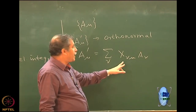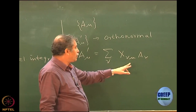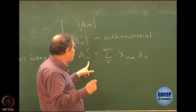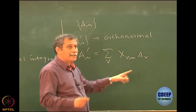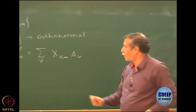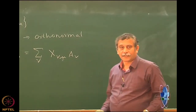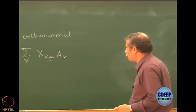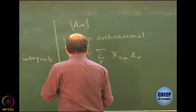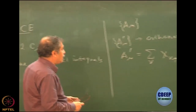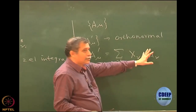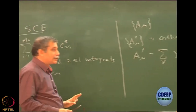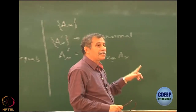We construct A_μ prime by a transformation, using a transformation matrix X. We write it as A_μ prime equals sum over ν of X_νμ A_ν. Note the way the indices have been used: for the μ-th vector A_μ prime, the μ-th column of X represents that vector. That is why it appears in the second index. You should be consistent whenever you write matrix notation with row and column.